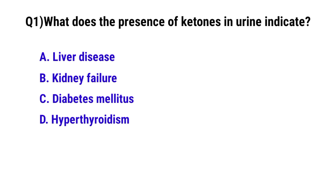Question number 1: What does the presence of ketones in urine indicate? The correct option is C: Diabetes mellitus.